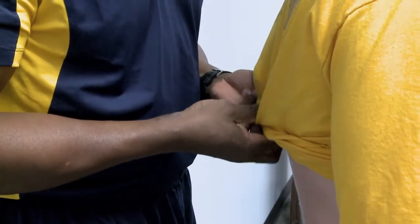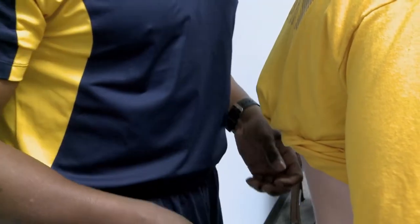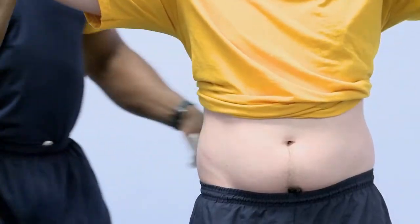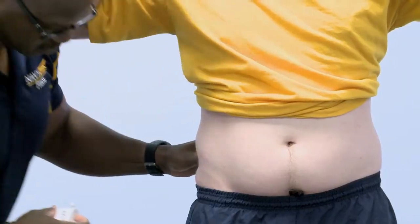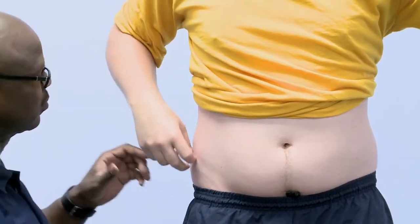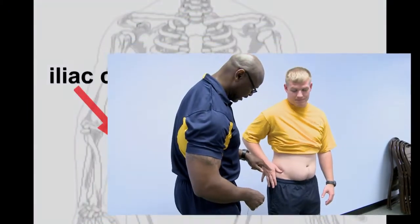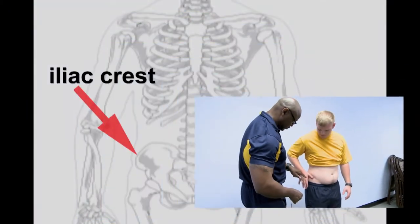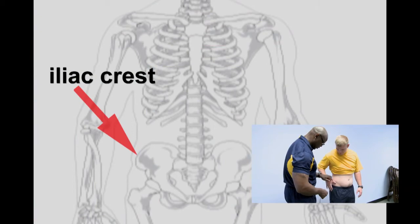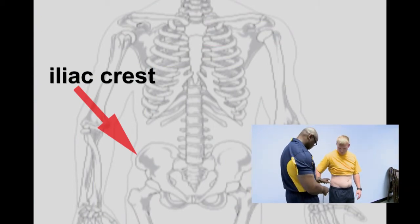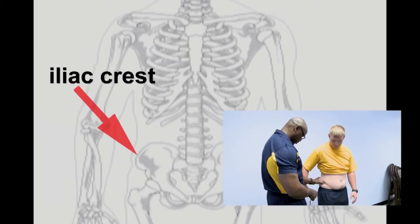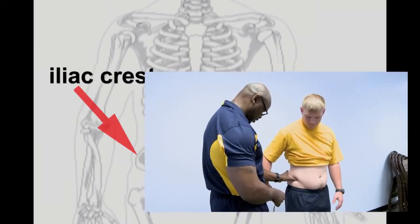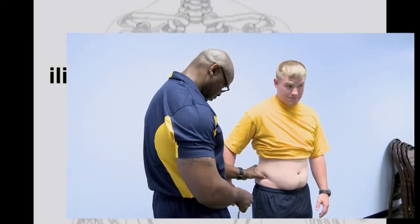The measurement will be taken immediately above the uppermost hip bone of the iliac crest on the right side of the body and vertically in line with the right armpit, or midaxillary line. The member may assist the tester in locating the measurement site by resting the right hand on the hip and using their thumb to locate the iliac crest.